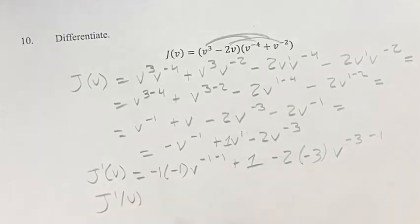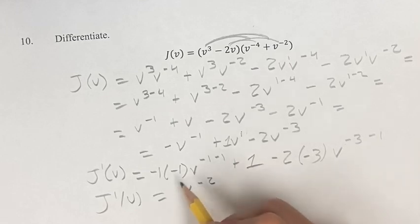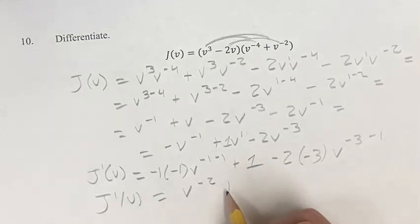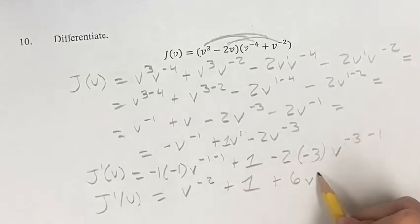And this is going to be a final derivative of negative 1 times negative 1 is 1. So, we just can have 1v to the negative 1 minus 1 is v to the negative 2. We have one of those, but when you have 1, you don't have to put the coefficient on the front. And plus 1 stays the same. Minus 2 times minus 3 is plus 6v to the negative 3 minus 1.